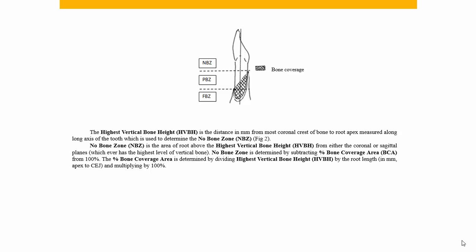The tooth is broken up into three zones. You have the no bone zone, which is the area of the tooth that has no bone coverage around the root — it's from the CEJ to the highest crestal bone, measured from the sagittal or coronal view. Then we have the partial bone zone. Normally, teeth — especially lower incisors — have a slightly higher level of bone on the lingual than on the facial, and that is taken into consideration. Below the partial bone zone we have the full bone zone, the area of the root considered to be completely covered with bone.